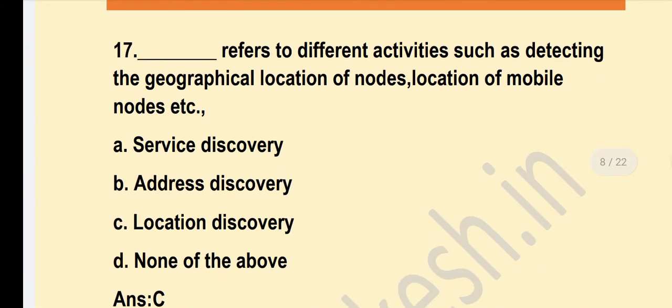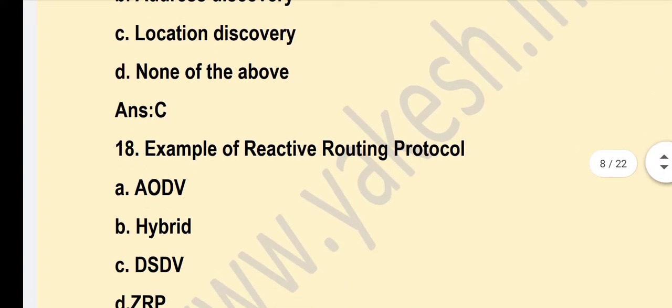The blank refers to different activities such as detecting the geographical location of nodes, location of mobile nodes, etc. Option C — Location Discovery — is the correct answer.